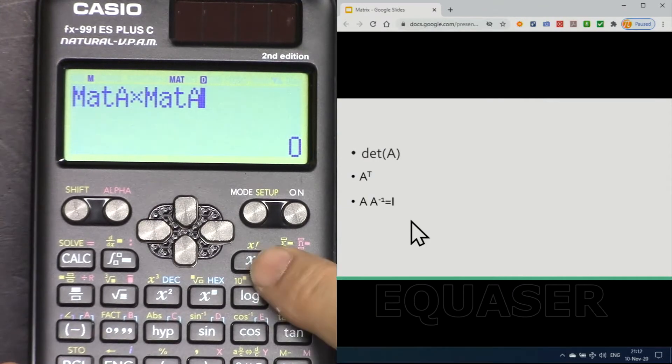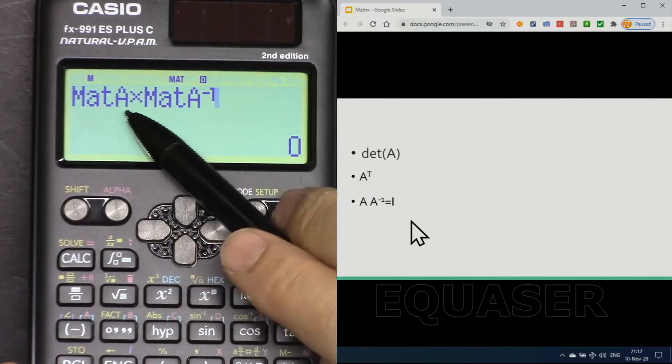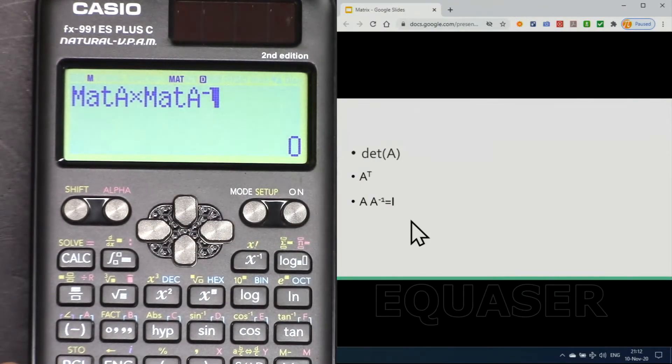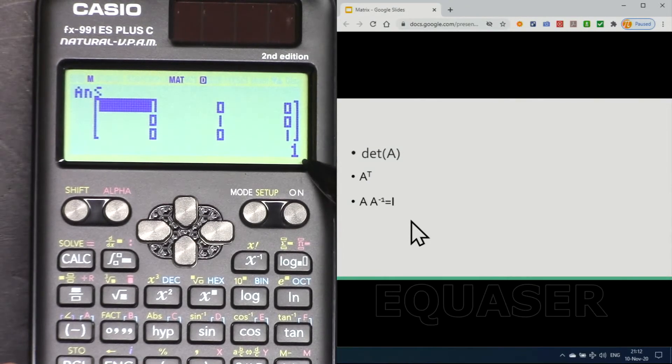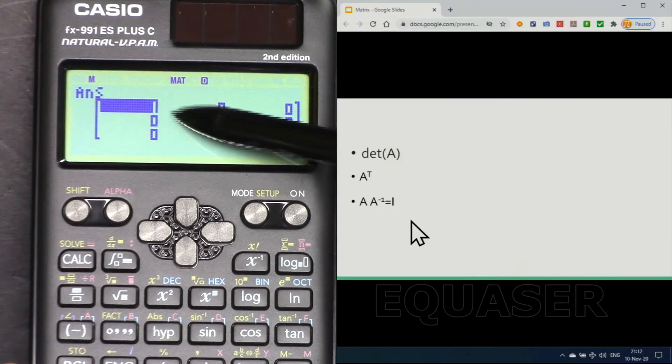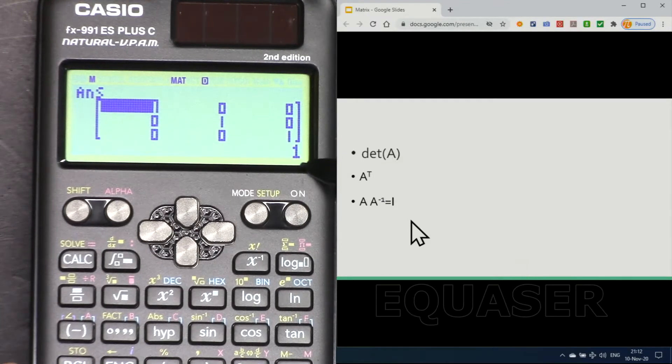Matrix and then 3 inverse. So I want to do matrix times inverse of matrix A. After the calculation we should get one, otherwise something is wrong. So this is identity matrix: 1, 1, 1.